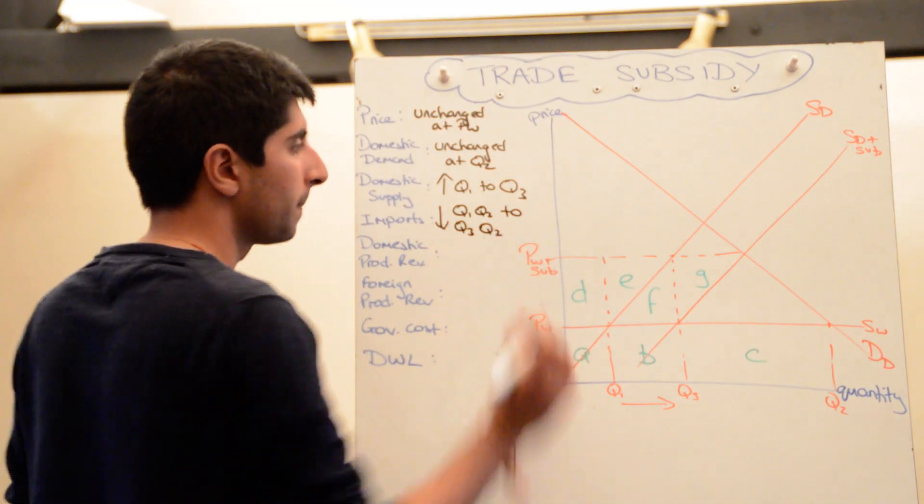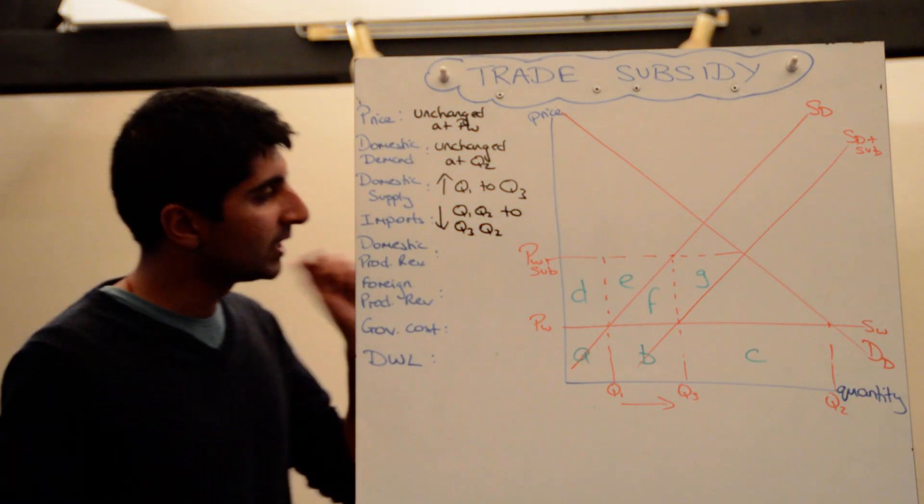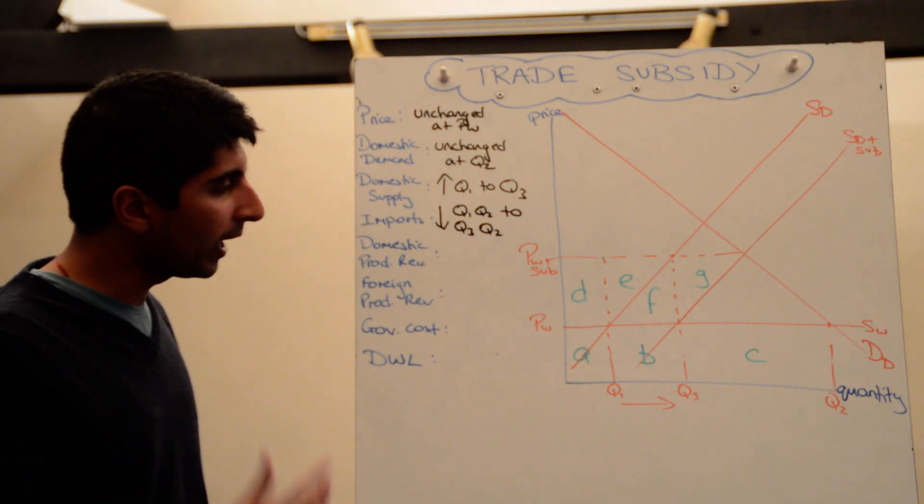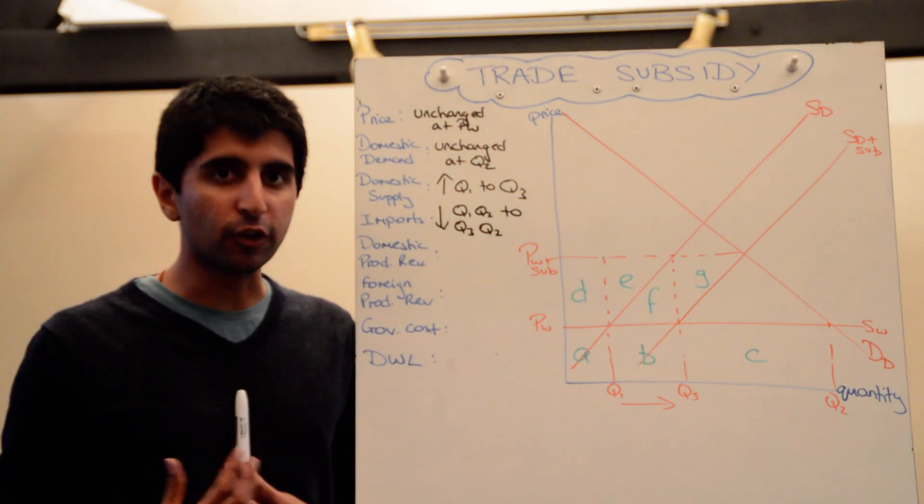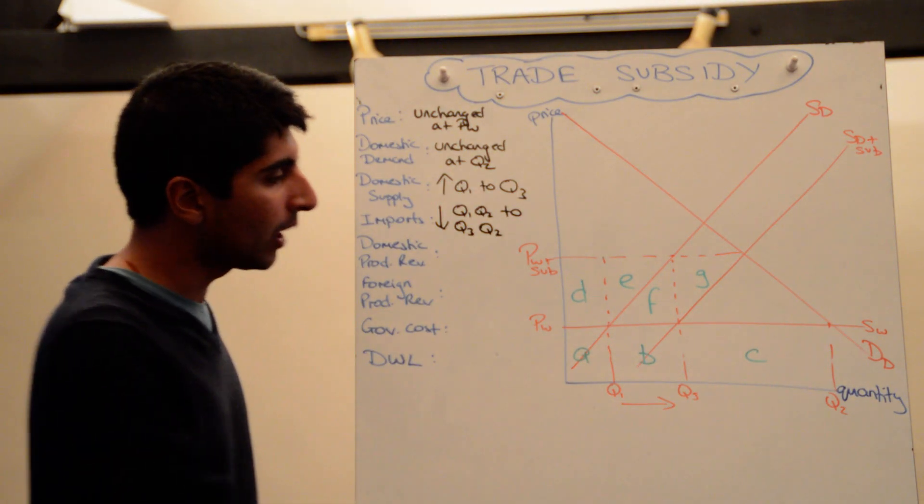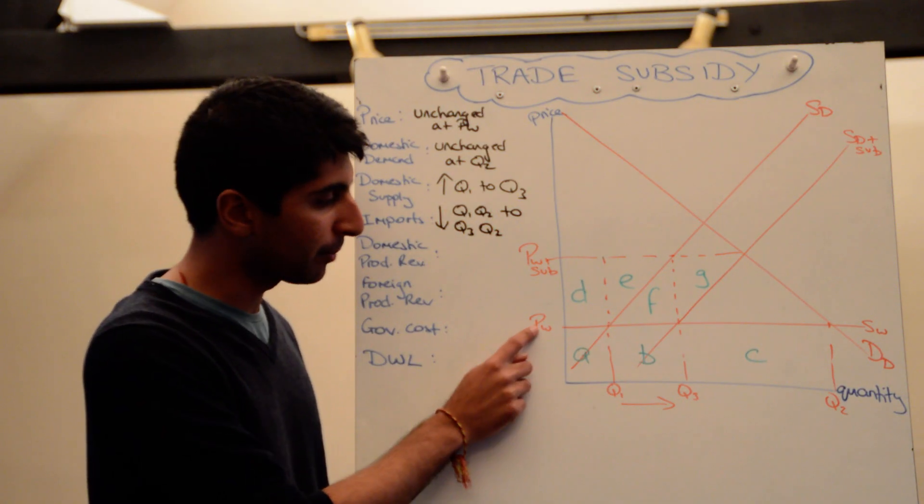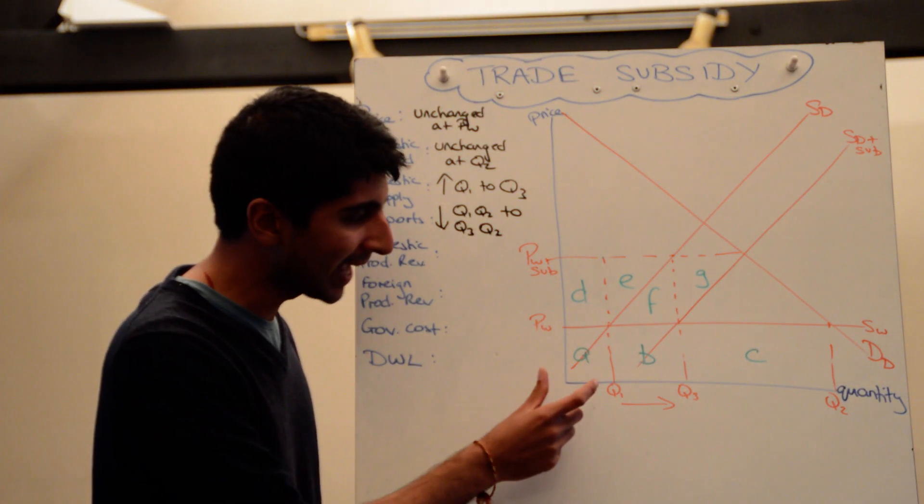That's the idea behind it. If we're having a look at revenues now, well initially domestic producers, what were they getting in terms of revenue? They were only getting area a because they were selling q1 and they were just getting the price of pw, so they were getting a.